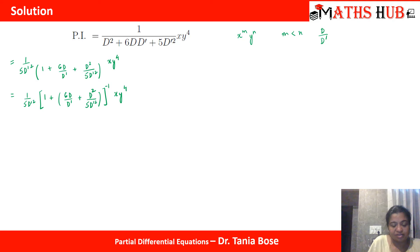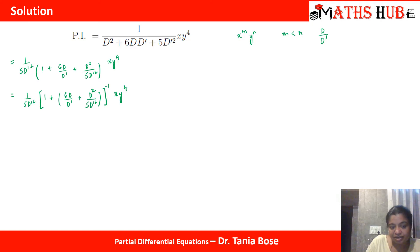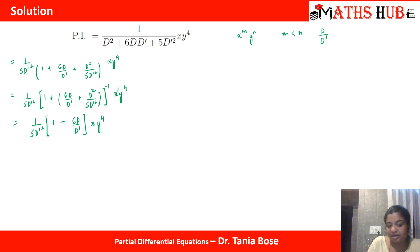We apply the binomial theorem. Since D acts on x which has power 1, we only need to expand to first order. The D² term and higher order terms will give zero. So we get 1/(5D'²) · (1 − 6D/D') applied to x·y⁴, because the square term's derivative becomes zero and all higher order terms also vanish.